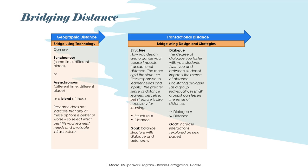Dialogue is the degree of dialogue that you foster with your students — both with you directly and between students, and with the whole class as well. The degree of dialogue in your class impacts their sense of distance. By facilitating dialogue as a group, individually, or in small groups, you can actually lessen that sense of distance. Increased dialogue and interactions online — whether asynchronous, synchronous, or both — decreases that sense of distance. Your goal here is to really increase interactions, and we're going to talk about interactions in the next video.